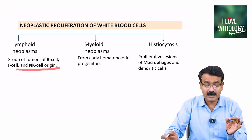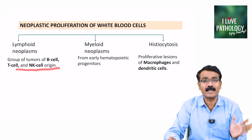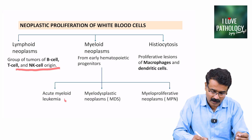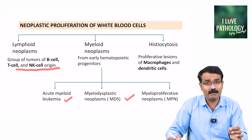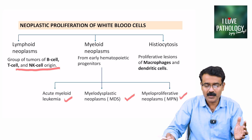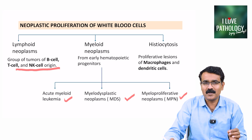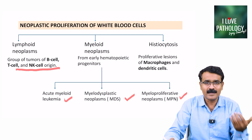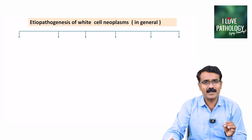Myeloid neoplasms arise from early progenitors of hematopoietic cells and are further categorized into acute myeloid leukemia, myelodysplastic neoplasms (MDS), and myeloproliferative neoplasms. In my earlier session, I have covered in detail the differences between myelodysplastic and myeloproliferative neoplasms. You can go back and see those videos. Now let us understand the etiopathogenesis of white blood cell neoplasms.